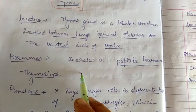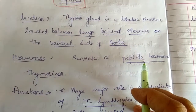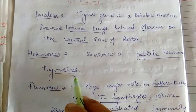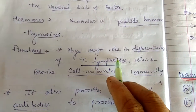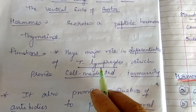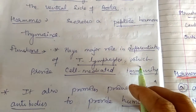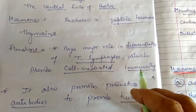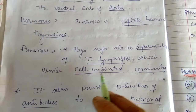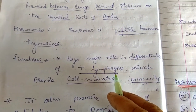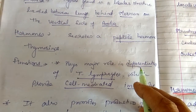Hormones secreted by the thymus gland are peptidal hormones — that means made up of protein — and the exact name of the hormone is thymosine. This thymosine hormone plays a very important role in the differentiation of T lymphocytes, and these T lymphocytes actually provide immunity — cell mediated immunity. This is the type of immunity provided by T lymphocytes which get mature in the thymus.